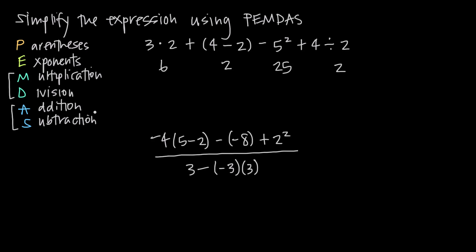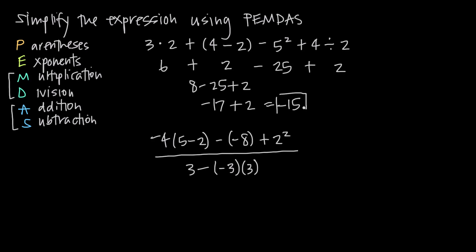Now all we have left is addition and subtraction. Our expression becomes: 6 plus 2 (from parentheses) minus 25 (from the exponent) plus 2 (from division). Going left to right: 6 plus 2 is 8; 8 minus 25 is negative 17; negative 17 plus 2 equals negative 15. So negative 15 is our final answer.